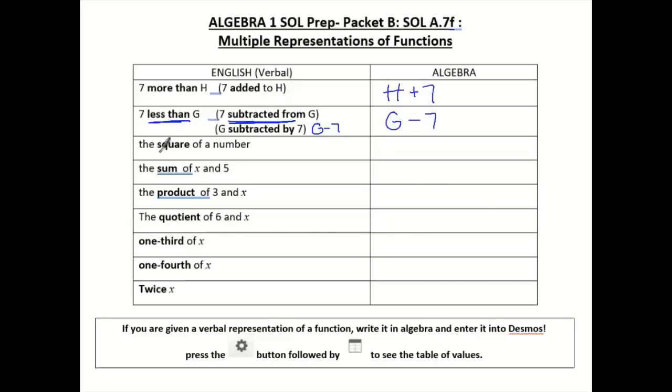The next one says the square of a number. So when you see the number, we like to usually use N. And square means we're going to square it, so we're going to put a little exponent of 2.